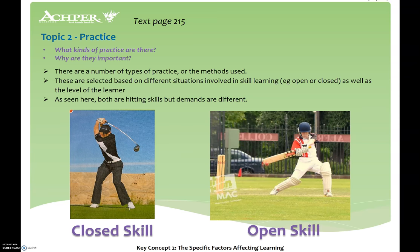There are different types of practice based on the situation and the level of the learner, open or closed. A closed skill like a golf swing is self-paced and internally driven, while an open skill like a cricket shot relies on external factors such as where the bowler is bowling.